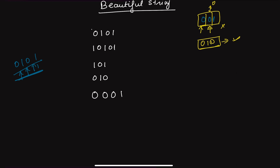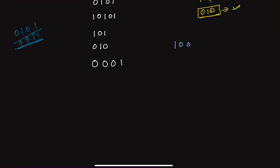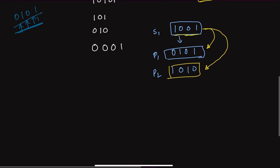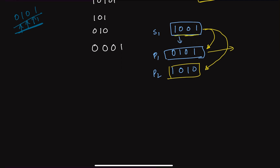Let's take the example '1001' and figure out how to make it beautiful. Since we know it's a binary string, there are only two possibilities for a beautiful string: possibility one is '0101...' and possibility two is '1010...'. What we have to do is check how many flips we need to convert the input string to possibility one, and how many flips to convert it to possibility two. Then we return the minimum of those two counts.